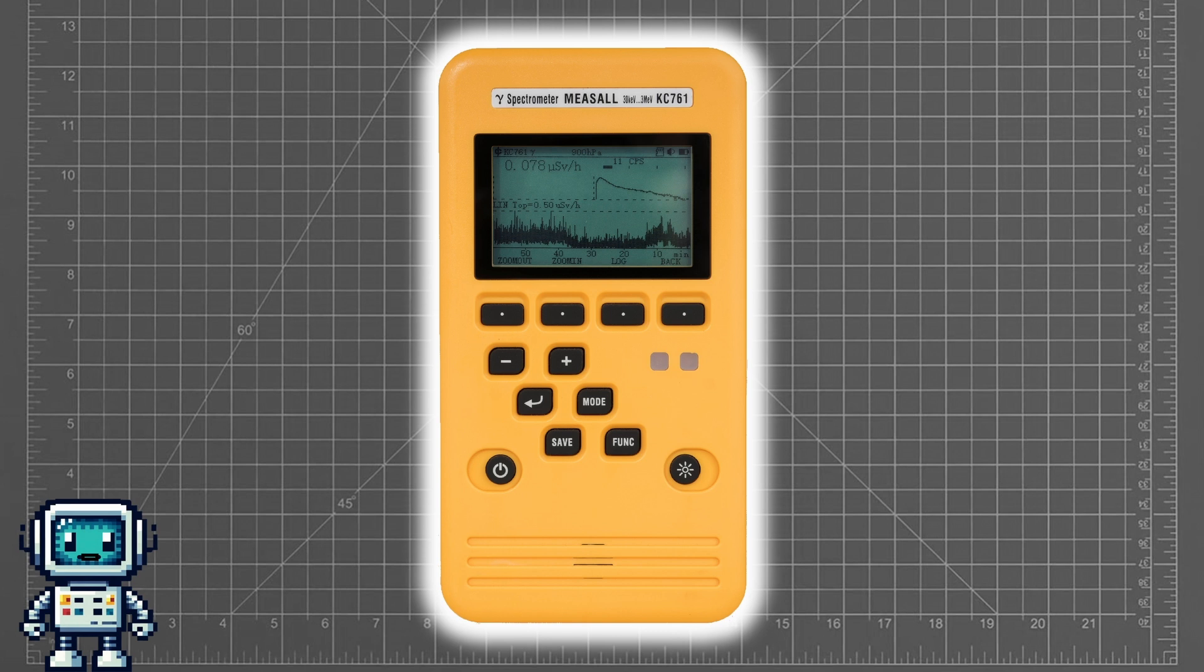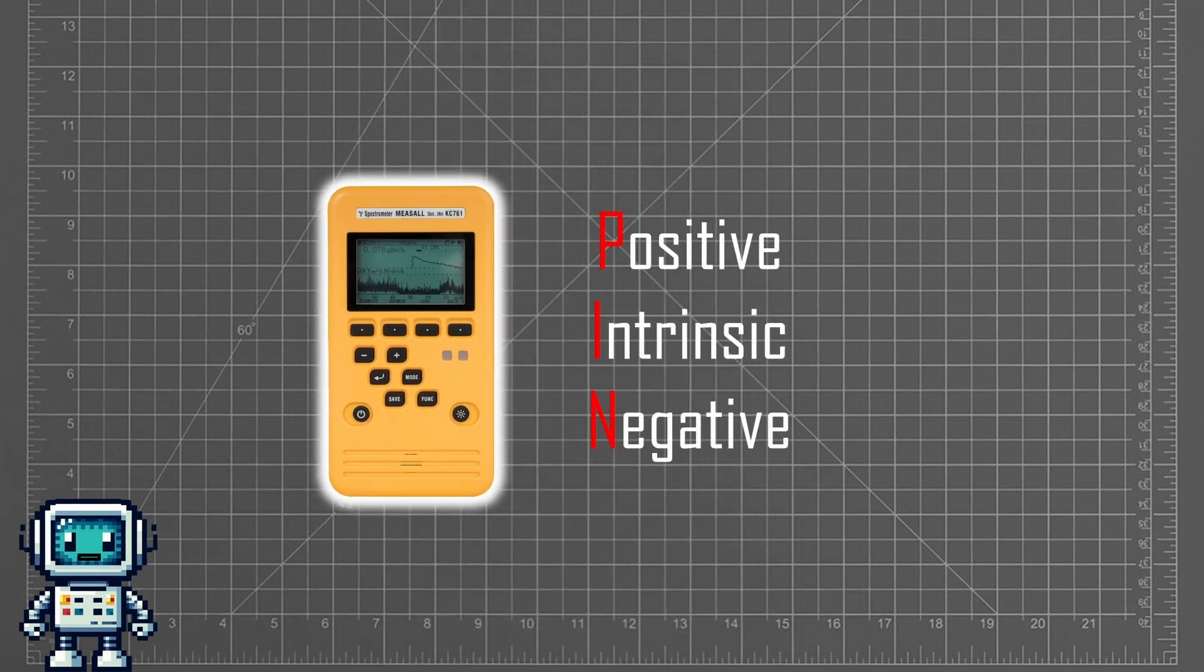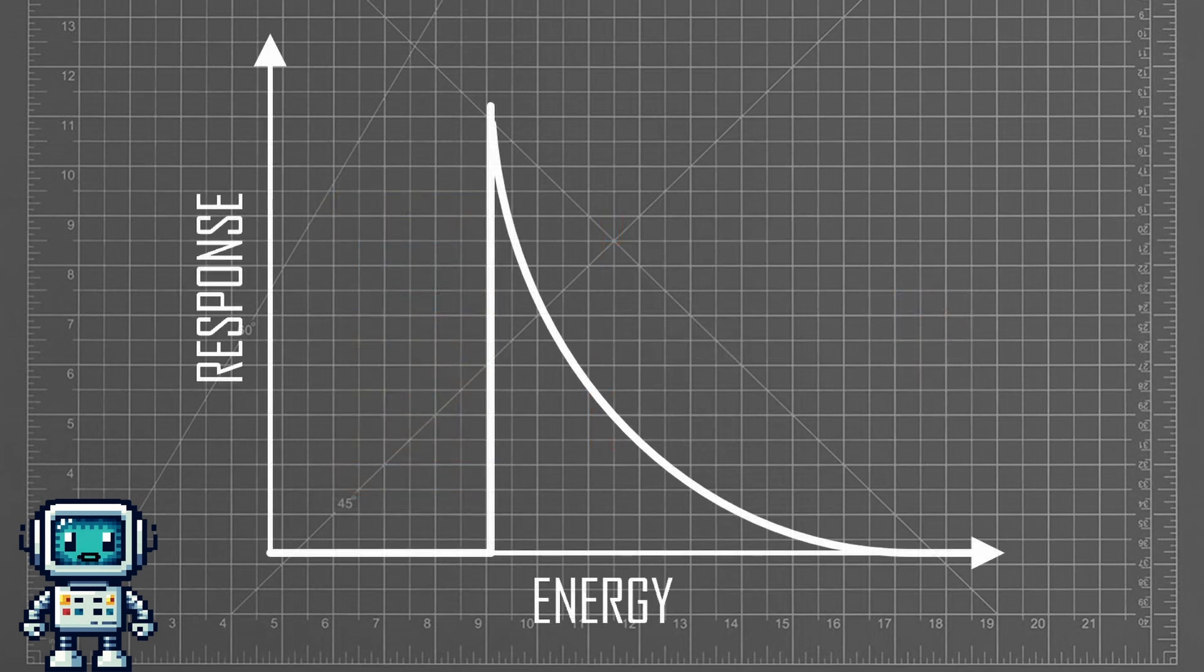The first thing to point out is that the beta detector on this device is a pin diode. This means that there are quite a lot of limitations in terms of the beta energy levels it can detect. Firstly, the top layer of the pin diode silicon sandwich will absorb a lot of the low energy beta particles. This imposes a lower limit on the detection energy of around 100 keV. Then the higher energy beta particles have a detection limit that is imposed by the limited stopping power of the intrinsic layer.